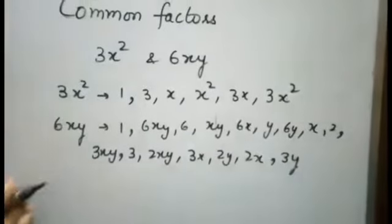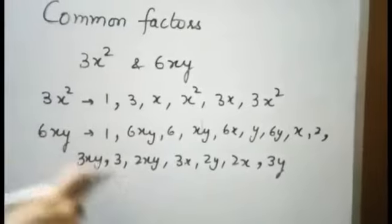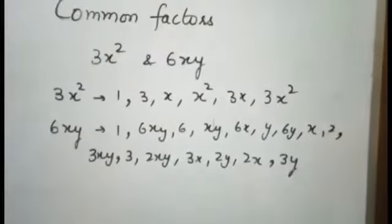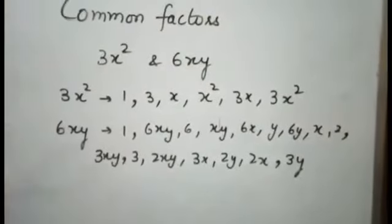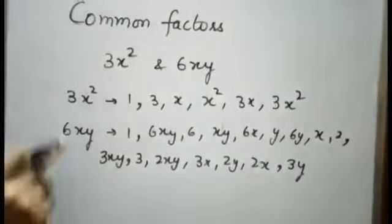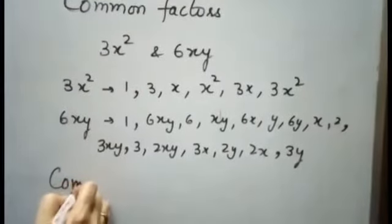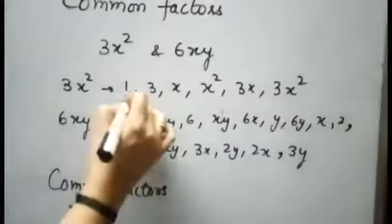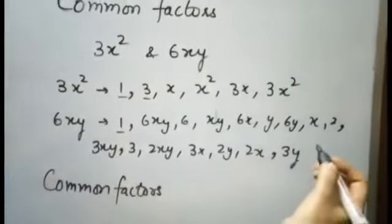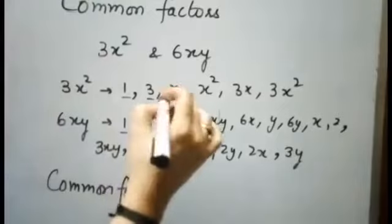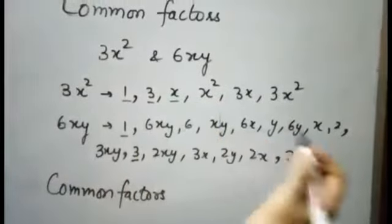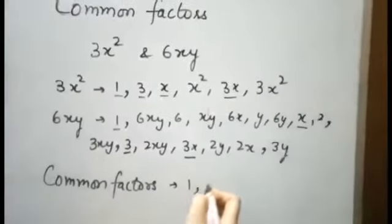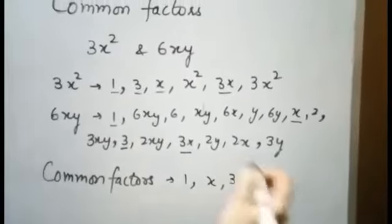The factors of 6xy are 1, 2, 3, 6, x, y, 2x, 3x, 2y, 3y, 6x, 6y, xy, 2xy, 3xy, and 6xy — all numbers which divide 6xy completely. Now we look for the common factors in these two sets. The common factors of 3x² and 6xy are 1, x, 3, and 3x.